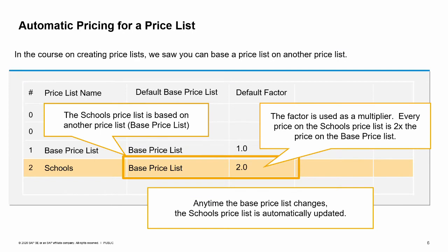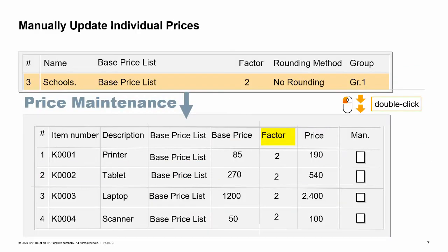In the previous course on creating price lists, we saw how you can base a price list on another price list by using a factor. For example, when the company decided they needed a new price list for schools, the manager created a price list based on the base price list with a factor of 2. The factor is used as a multiplier — every price on the school's price list is 2x the price on the base price list. Anytime the base price list changes, the school's price list is automatically updated. This is a useful way to have automatic pricing updates.